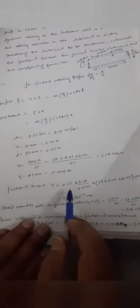R = 10 mm = 0.01 m. L = 50 mm = 0.05 m. Surface velocity U = 2πRN/60 = 2π × 0.01 × 3000/60 = 3.14 m/s. Thickness T = 0.1 mm = 0.0001 m. Substituting: T = 0.01 × 3.14 / 0.0001 × 2π × 0.01 × 0.05 × 0.01. Frictional torque T = 9.85 × 10⁻³ Nm.